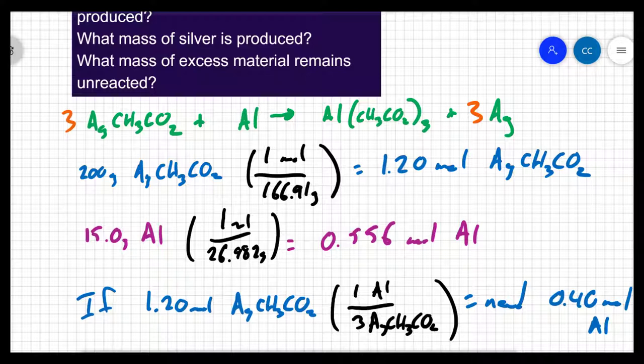Do I have 0.4 moles of aluminum? Yeah, I've got 0.556 moles of aluminum. I have an excess of aluminum, which means that my silver acetate is the limiting reactant.